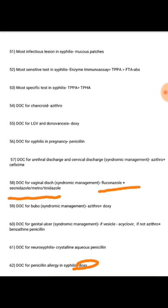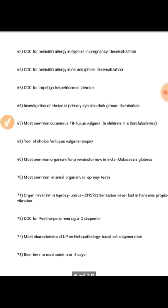Revision of syndromic management: urethral or cervical discharge — azithromycin plus cefixime; vaginal discharge — fluconazole plus metronidazole or tinidazole; bubo — azithromycin plus doxycycline; genital ulcer with vesicle (viral origin) — acyclovir; without vesicle — azithromycin plus benzathine penicillin; neurosyphilis — crystalline aqueous penicillin; penicillin allergy in syphilis — doxycycline.